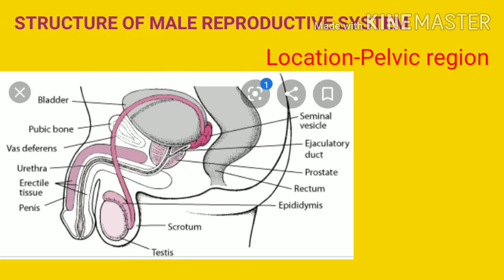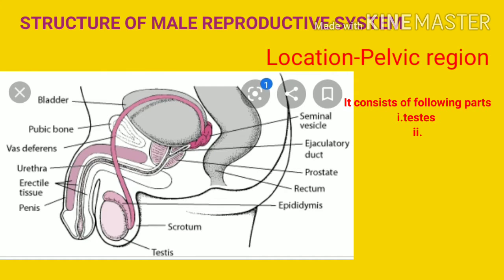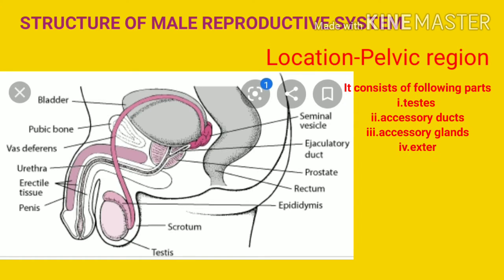Hello students, good morning to all. Today I will explain the structure of the male reproductive system. This is the structure of the male reproductive system. The male reproductive system is located in the pelvic region and consists of the following parts.